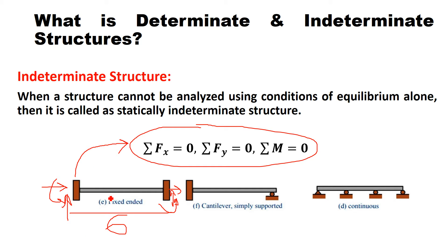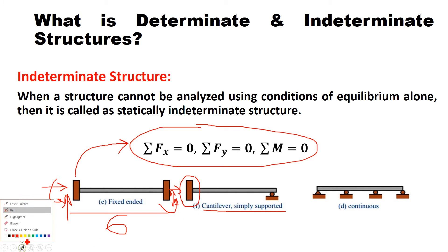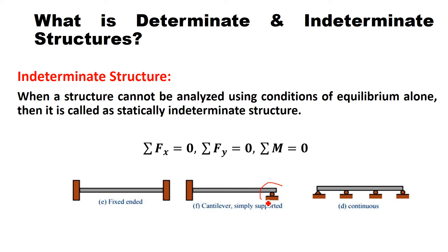So it is statically indeterminate. Similarly, the second beam is a cantilever with a simple support at the end. If it is a fixed support at the left there are three reactions, and at the right end there is a roller support giving one reaction. So total number of reactions in this beam are four. We have only three equations of equilibrium, so this beam is also statically indeterminate.